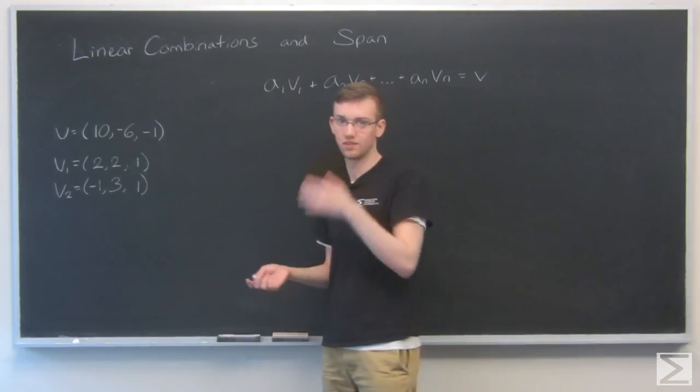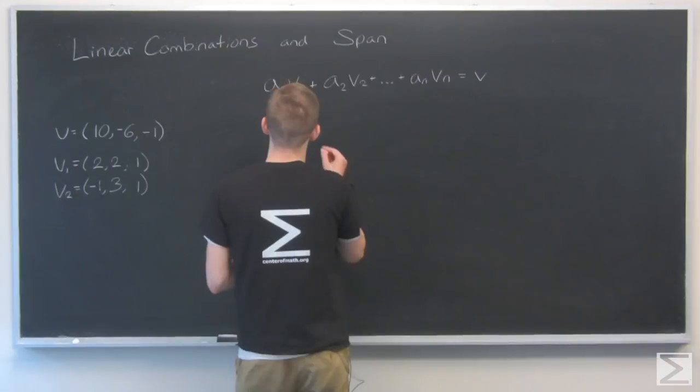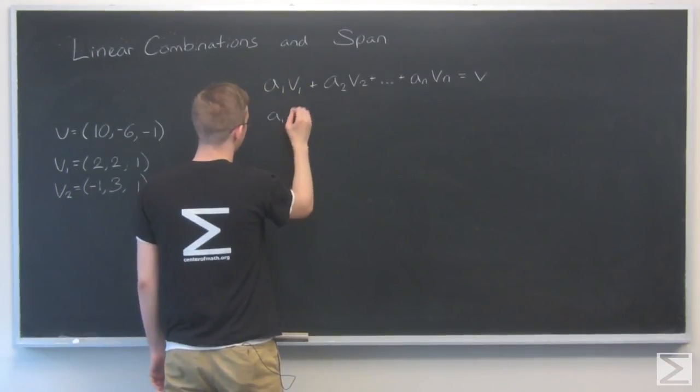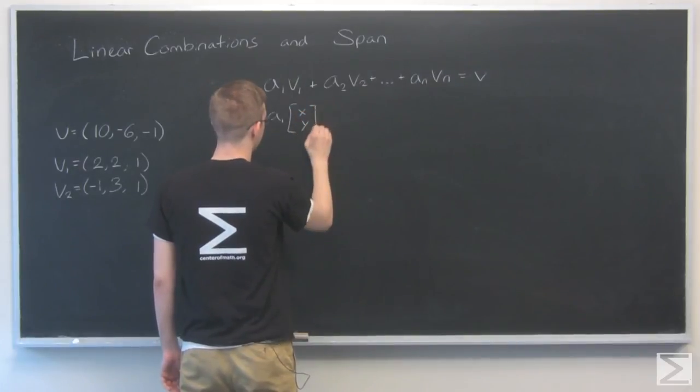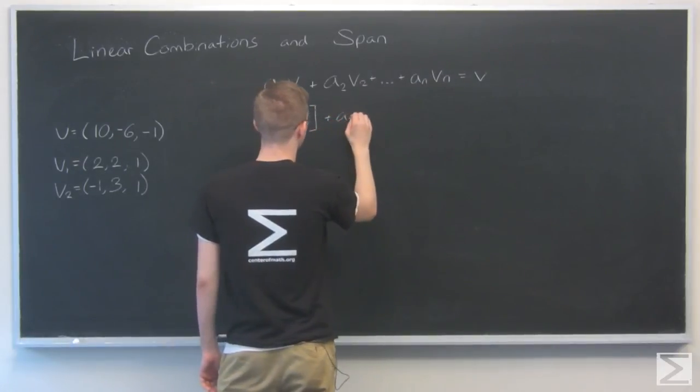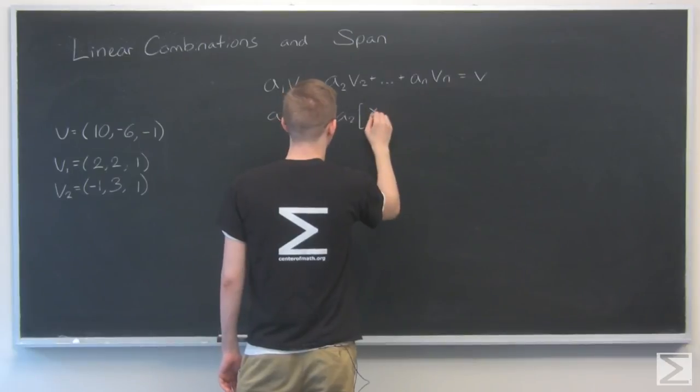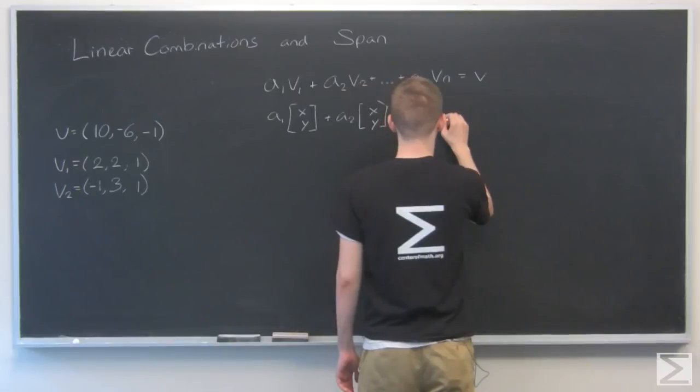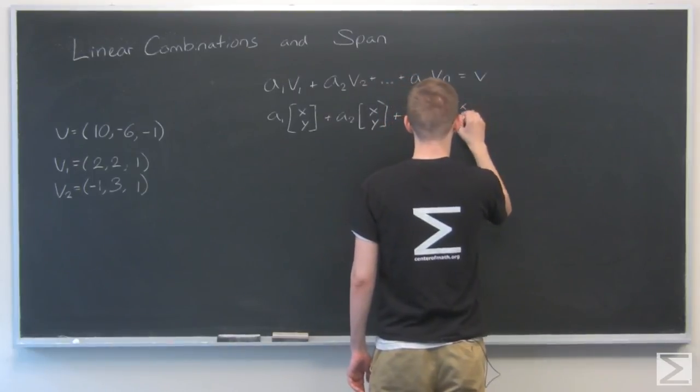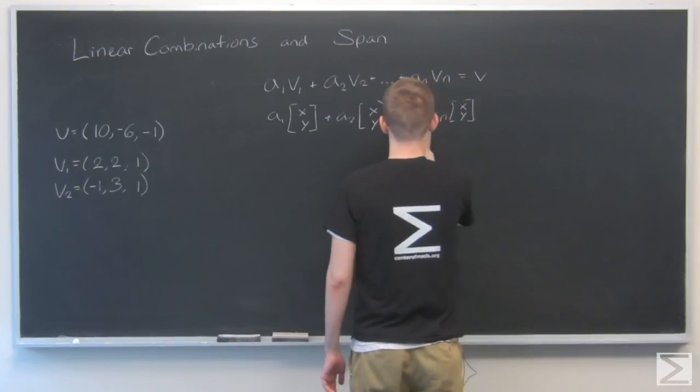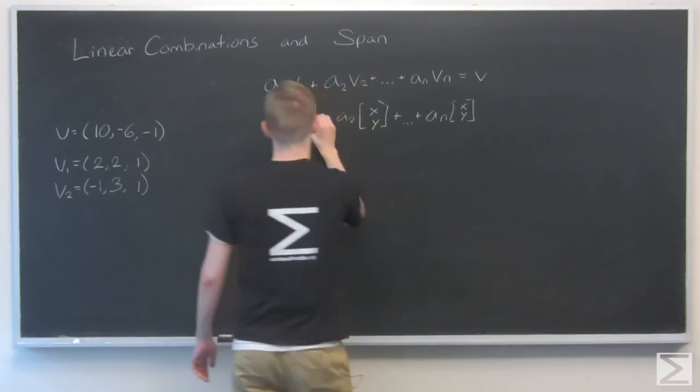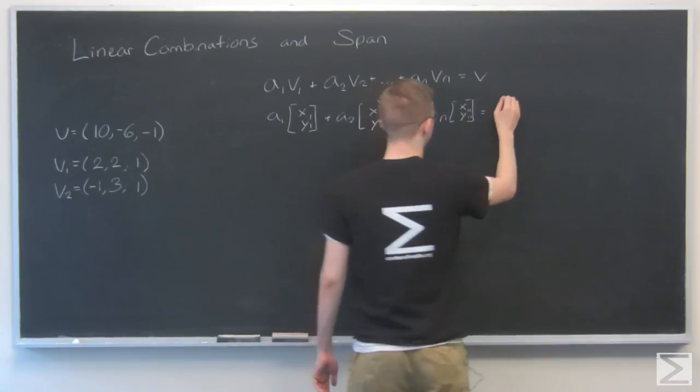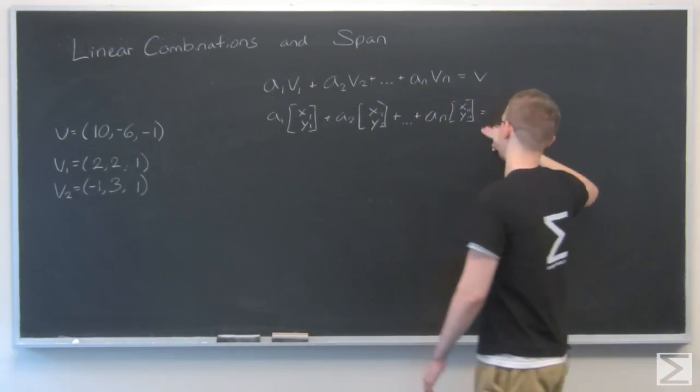A vector has certain components. For my purposes, I'm just going to call them x and y for now. That's one, two, and that's just my resultant vector.